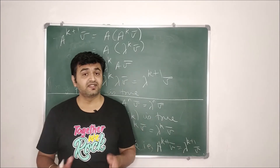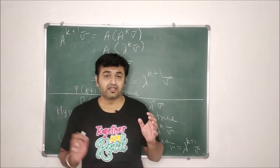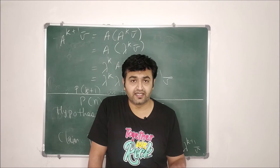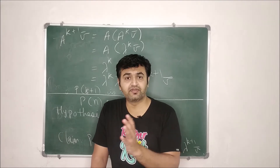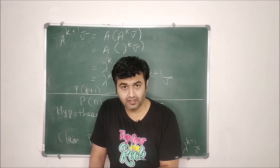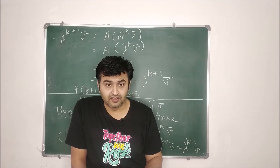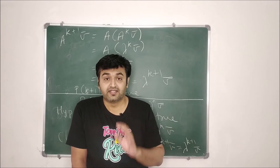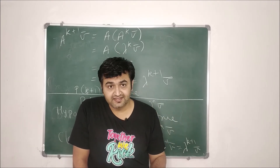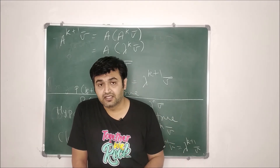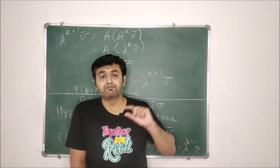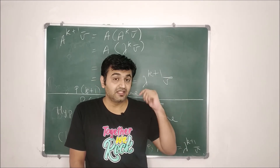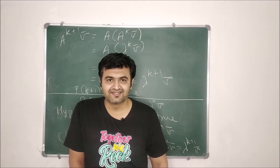So keep this in mind: whenever lambda and V̄ are the eigenvalue and eigenvector for a matrix A, and you take any natural number power of A, the eigenvectors remain the same whereas the eigenvalues get multiplied by that power. Now let's come back to the examples.